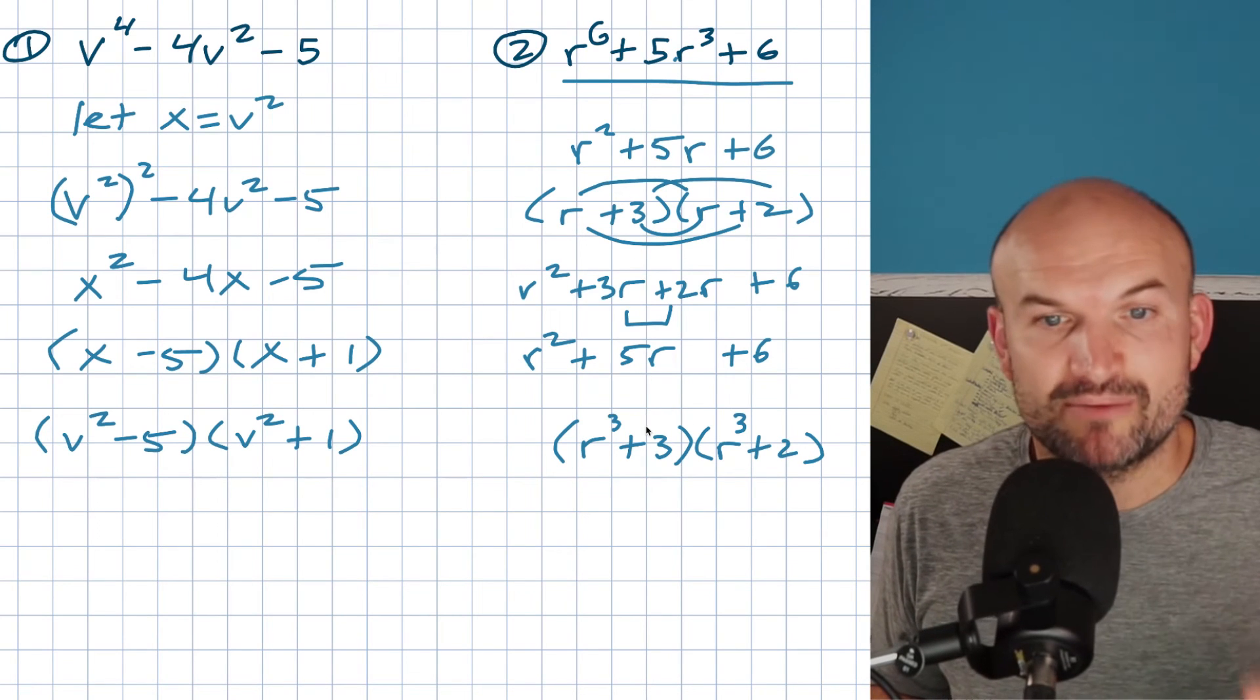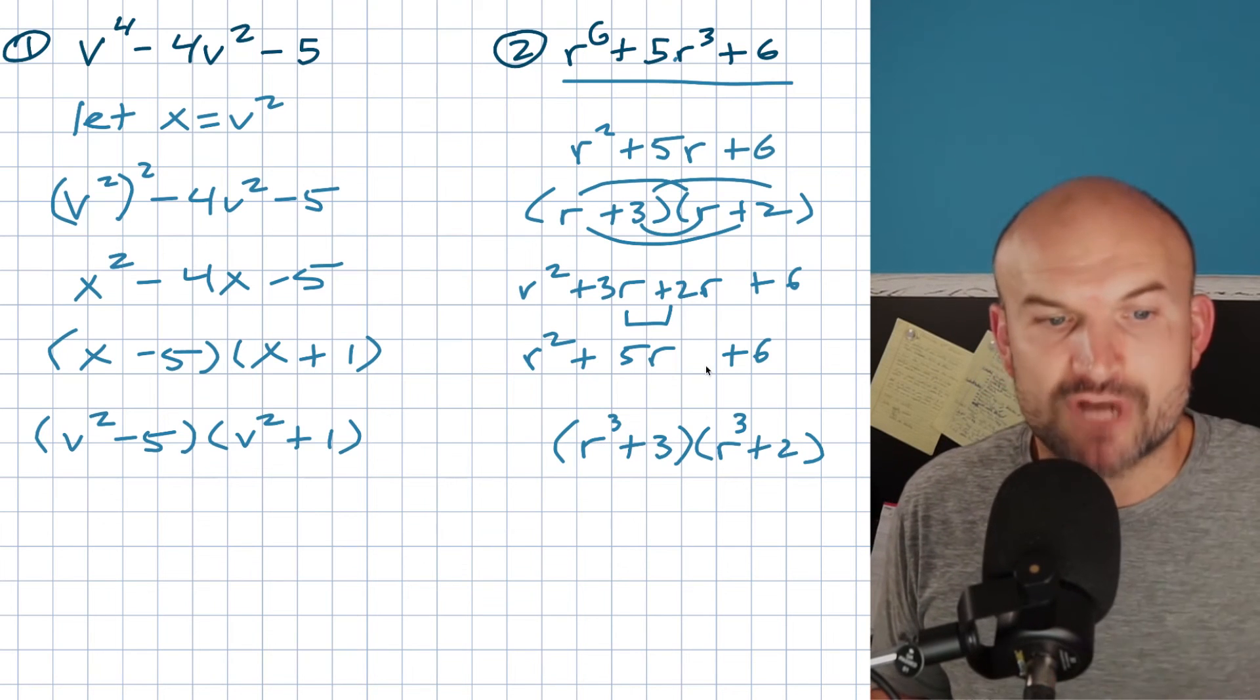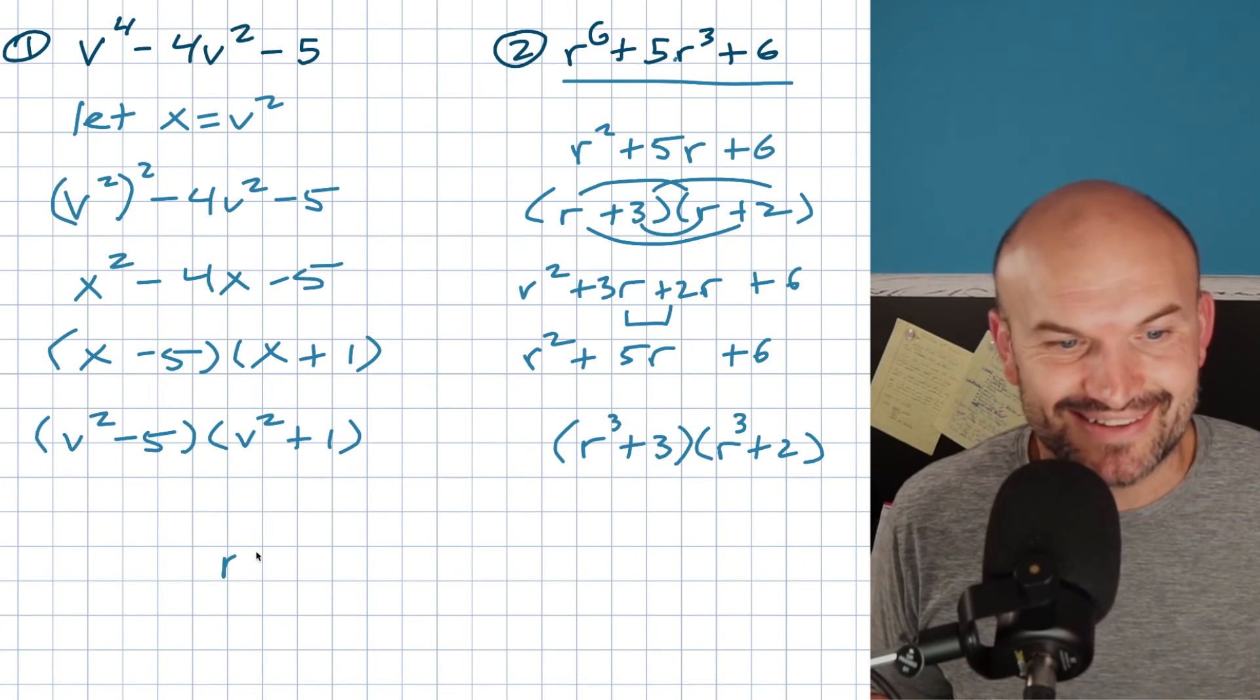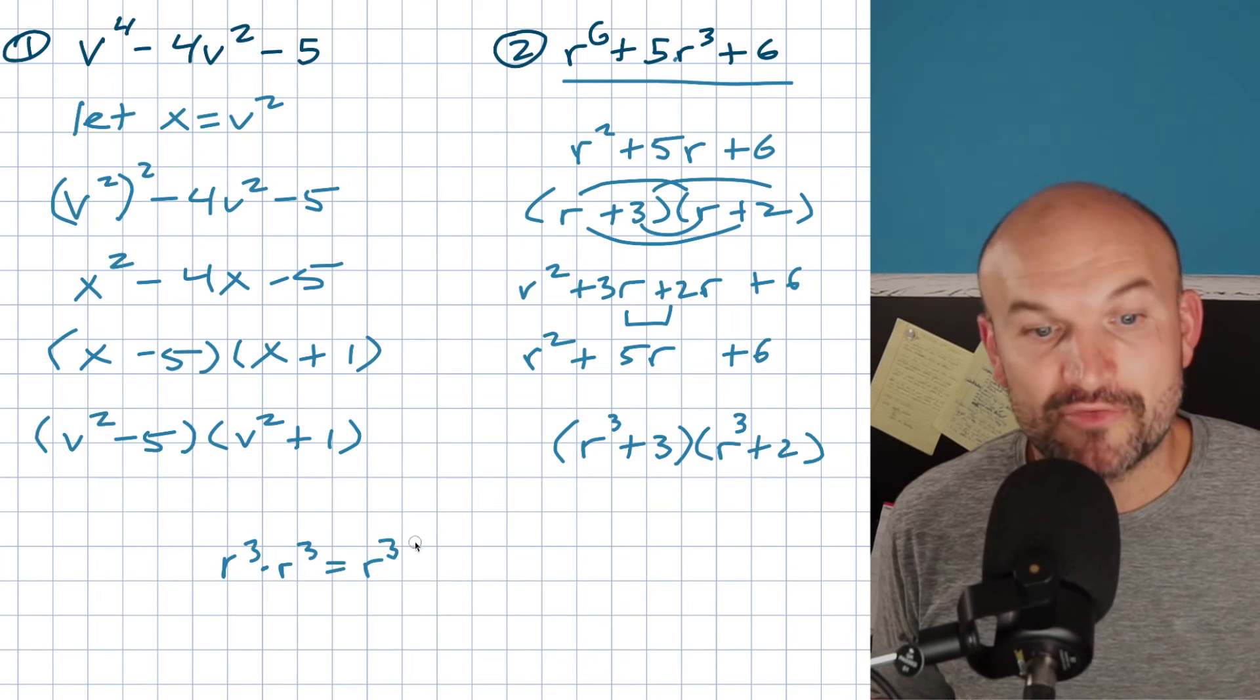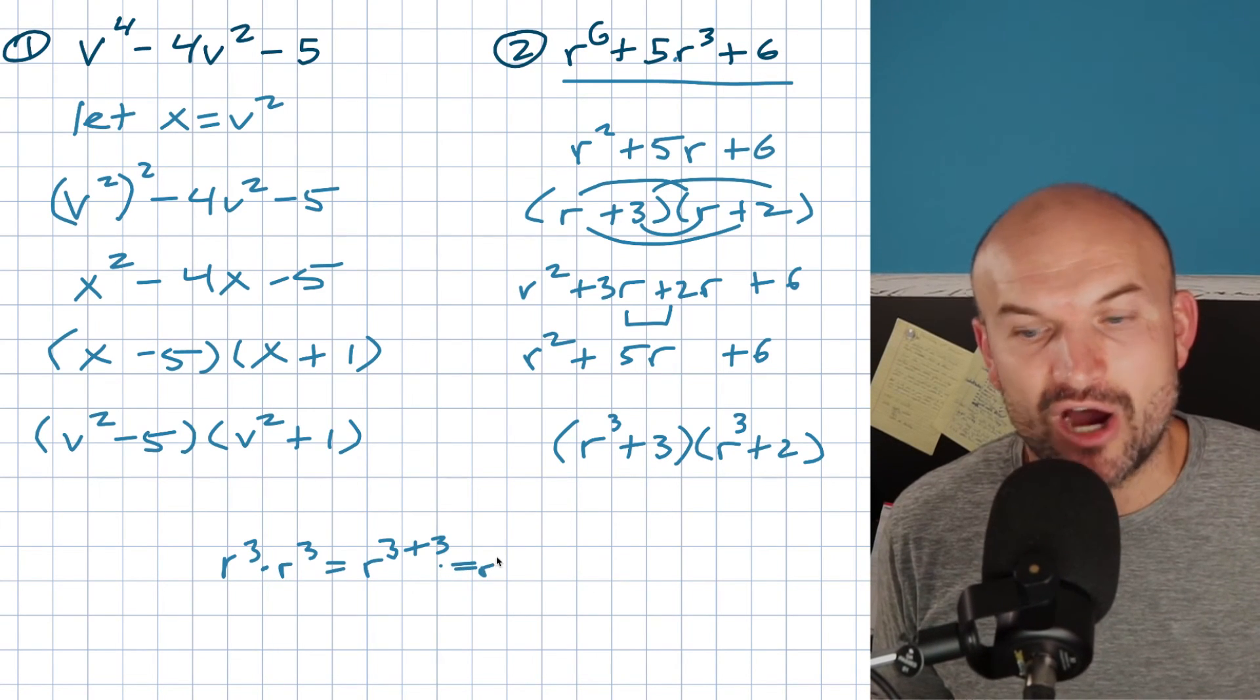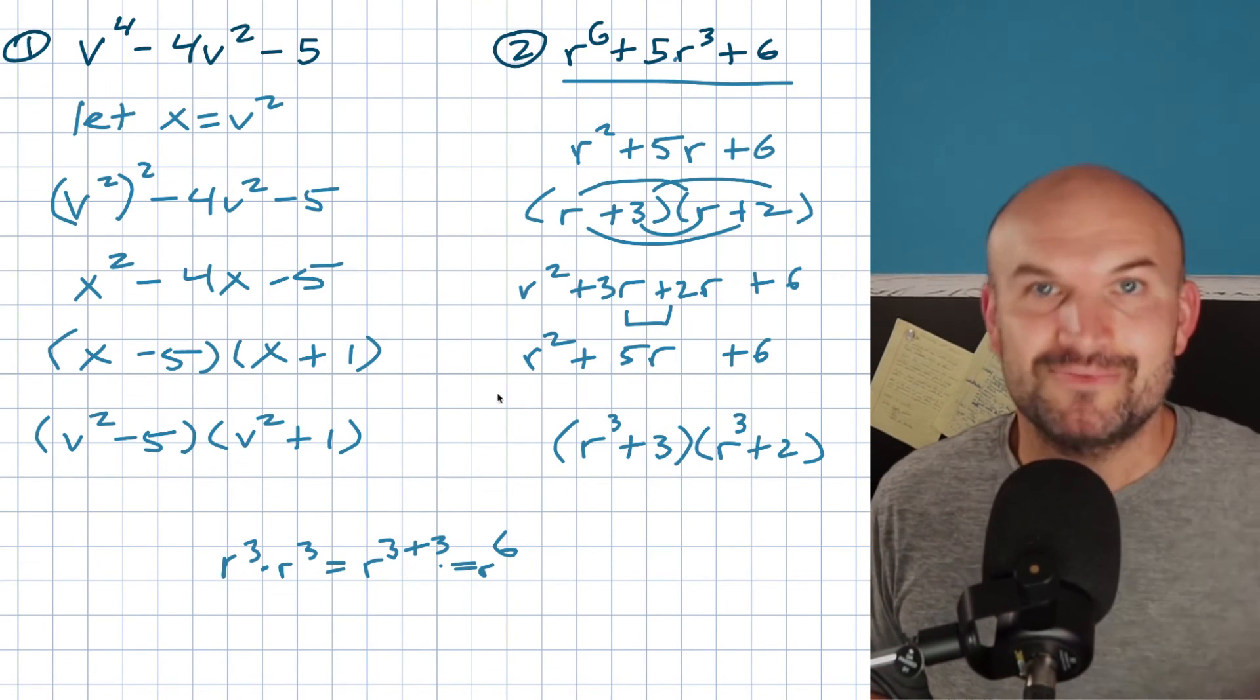Now, something else happens very importantly as well. Remember the first term, r times r is r squared? Well, what's r cubed times r cubed? Don't say r to the 9th. r cubed times r cubed is equal to r to the 3 plus 3, which is equal to r to the 6th power. So therefore, you guys can see that this actually works.